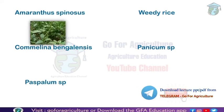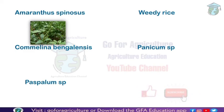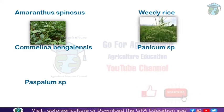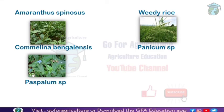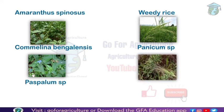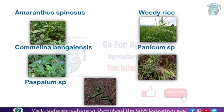Now let's see the pictures for identification. This is the picture of Amaranthus spinosus — it is a major weed of rice. This is weedy rice — it has an appearance like rice, but it is actually a weed, not rice. This is Commelina bengalensis — you can easily identify it by its violet-colored flower. Next is Panicum species, and this one is Paspalum species. These pictures help with identification.